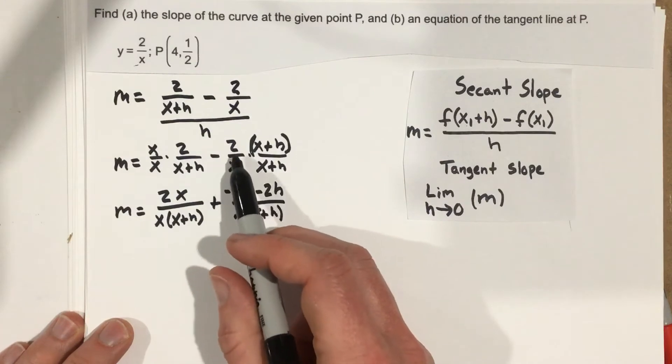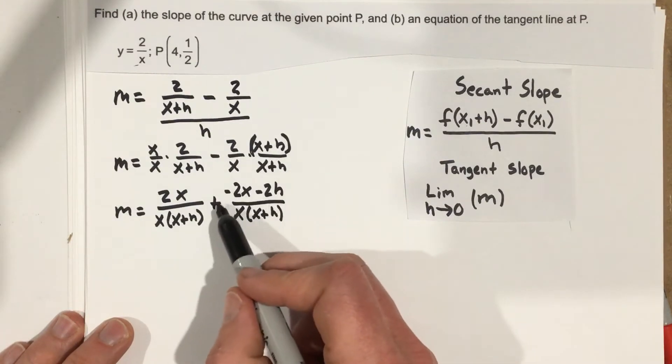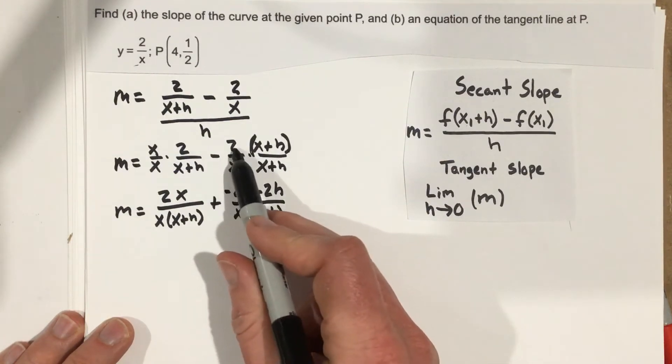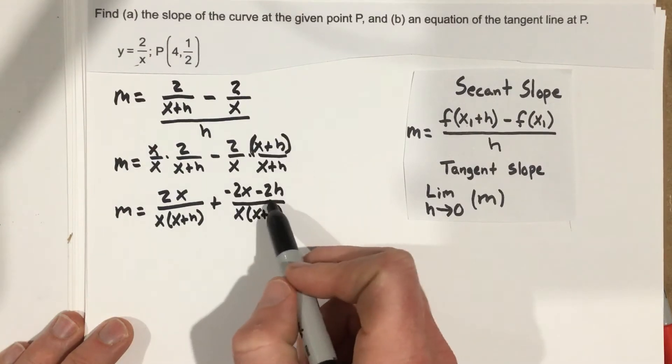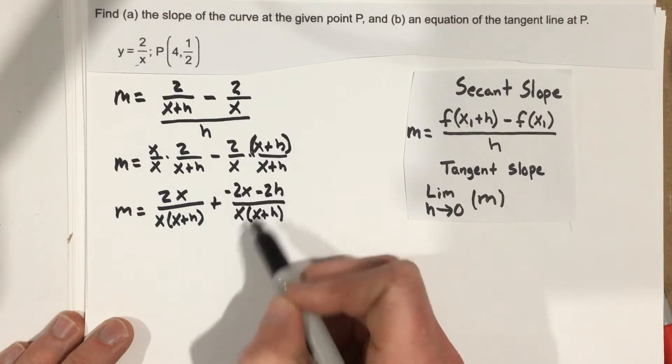And I did this for a reason to make sure that I understand that this negative is being distributed to the 2, which is being distributed to each term. So that's why I changed to a plus and just distributed it throughout.